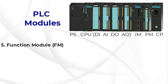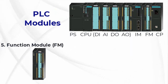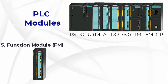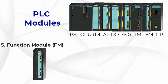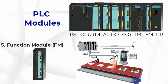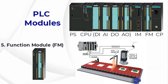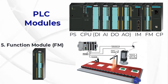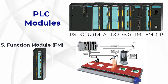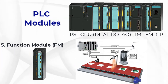5. Function Module (FM): The function module is also added as an optional module. It is used only in modular PLC or rack-mounted PLC and not in compact PLC. You can use the analog and digital types of modules. High-speed counter modules, PID, and weighing modules can easily connect to function modules. PID, CNC, and position controllers can interface to PLC through function module cards.